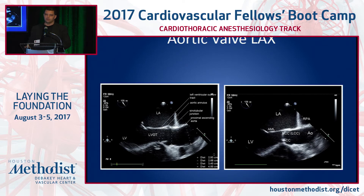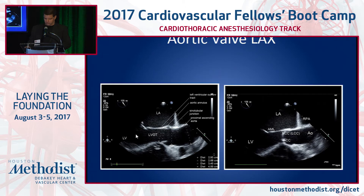Long axis view, same thing, aortic valve, normal images. A bunch of things that you're going to see on each one: the leaflets, the LVOT, sinus of Valsalva, sinotubular junction, ascending aorta, right ventricle somewhere down here, and then mitral valve — a little bit of mitral valve — left atrium and left ventricle down here.